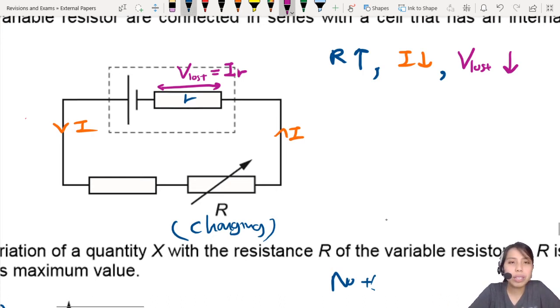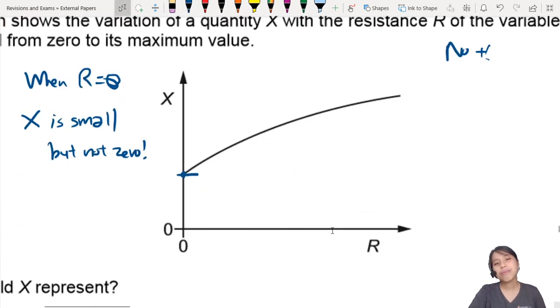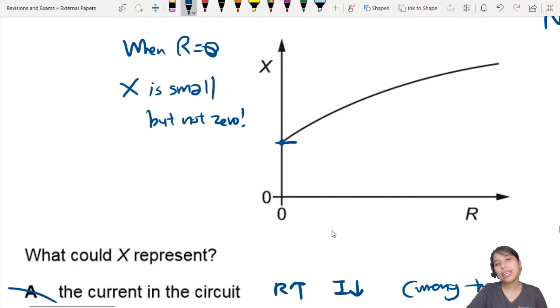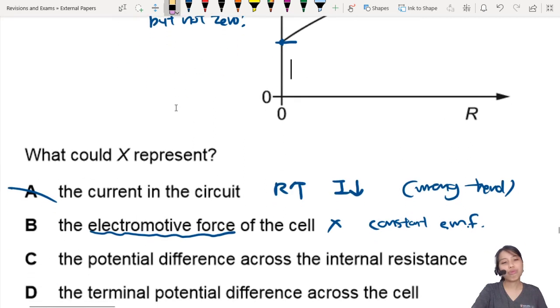Aiyah. So, this one is not correct. A lesser current means lost volts decrease. So, no. The trend is wrong again. If you want something like that, it should decrease, not increase. So, C also cannot. Wrong trend.